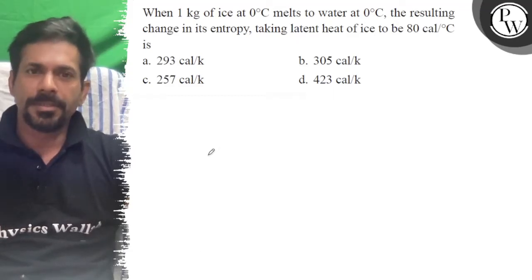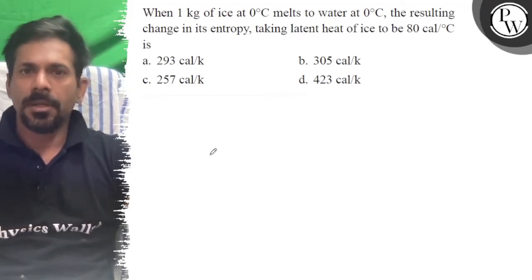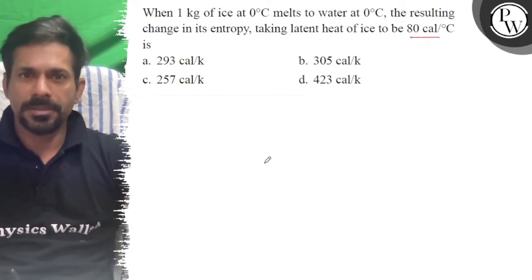Hello, let's see the question. When 1 kg of ice at 0 degree Celsius melts to water at 0 degree Celsius, the resulting change in entropy, taking latent heat of ice to be 80 calorie per degree Celsius...